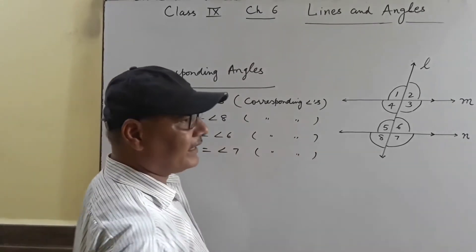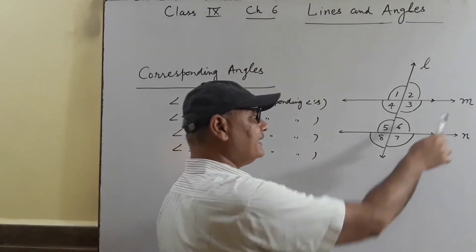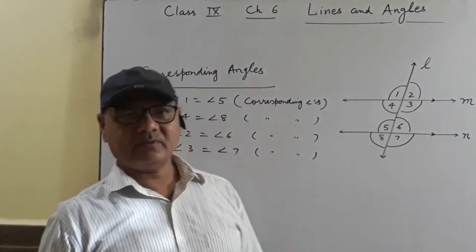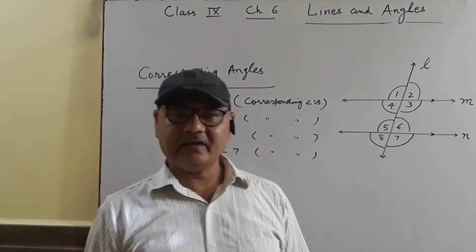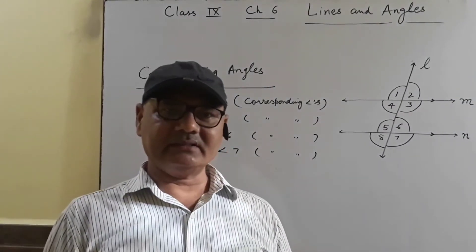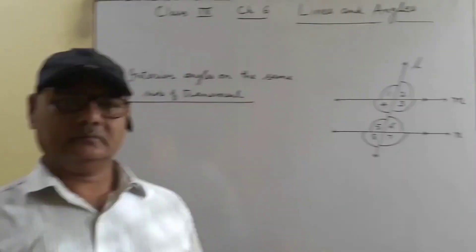Once again I repeat: if lines are parallel, then corresponding angles are equal. And if corresponding angles are equal, then lines are parallel.